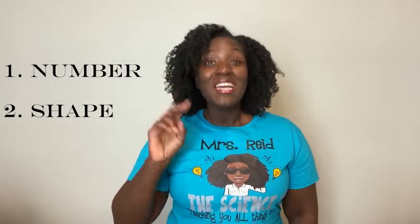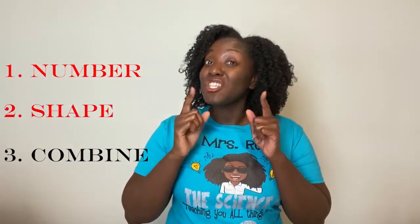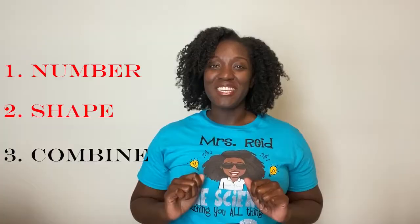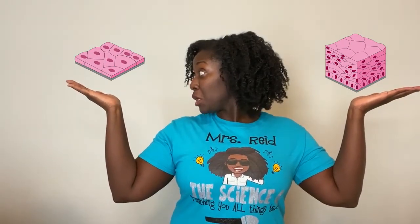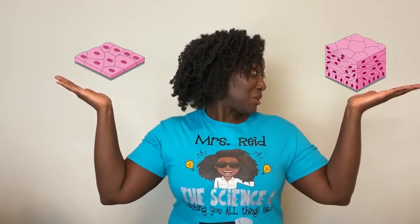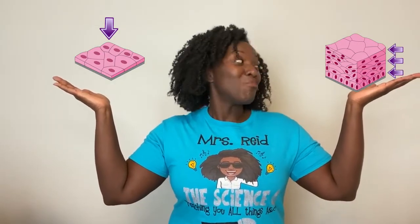Now that you know all epithelial cells have a basement membrane, let's do three things together: first, determine the number of cell layers; two, determine the shape of the cell layers; and three, combine the number with the shape to name the epithelial tissue. Understanding these three steps is huge. Let's focus on numbering cell layers first — we have simple and stratified. Simple means single, stratified means multiple.